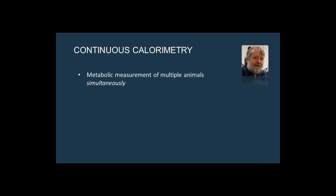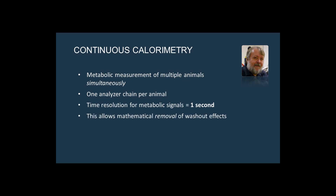If you need very rapid response, there's basically no alternative to using what's called continuous calorimetry — measuring the metabolic rate of multiple animals simultaneously, with one analyzer chain per animal. This is a relatively pricey option, but if you need the very finest resolution, it is pretty much the only option that is going to give you the second-by-second information needed for certain studies. Because we're essentially oversampling relative to the time constant of the cage, there are mathematical techniques that allow the removal of wash-out effects from the cage volume versus flow rate, and this allows you to look at even the most fleeting and subtle metabolic signals.